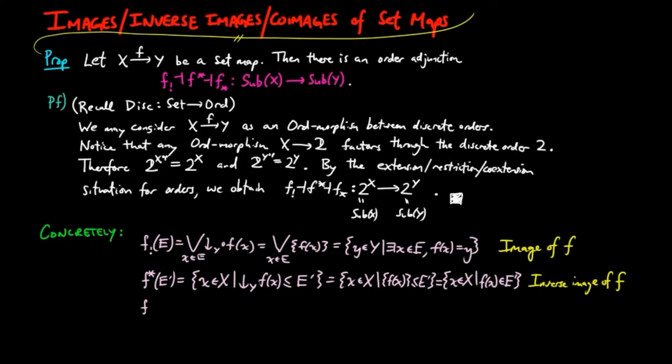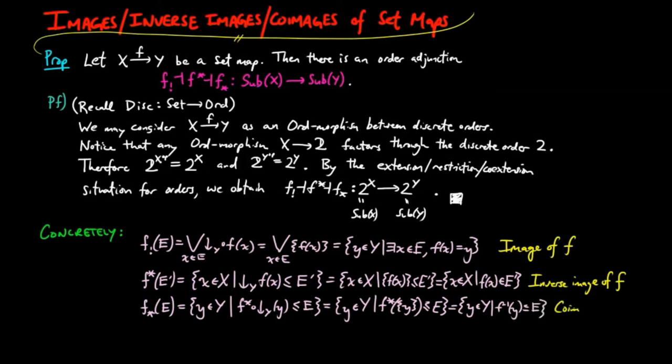And finally, the f co-extension on a subset e is defined by the set of all elements y in Y such that the f restriction precomposed by the lower segments on the set y of y is less than or equal to e. This equals the set of all elements y in big Y such that the f restriction on the singleton set y is less than or equal to e, which equals the set of all elements y in big Y such that f inverse of the element y is a subset of e. This is the co-image of f.